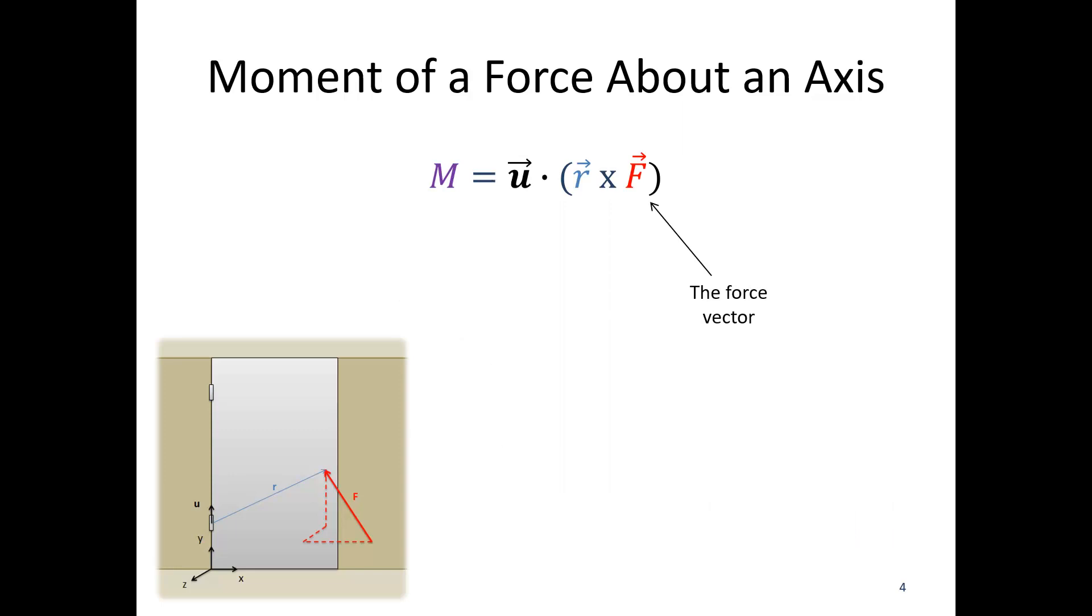F is my force vector with x, y, and z components. R is the same thing I did for a moment of a force about a point except here we can start anywhere along the axis that I'm interested in taking the moment about and end anywhere along the line of action of the force.